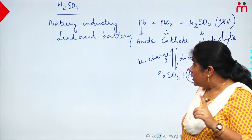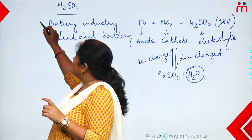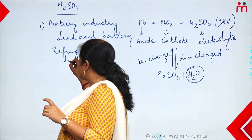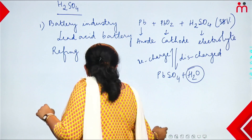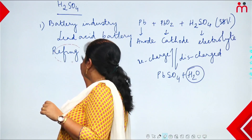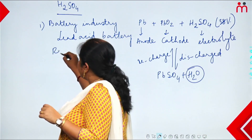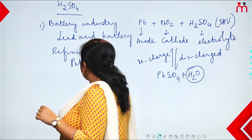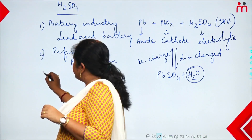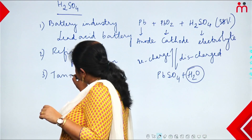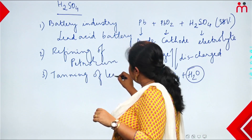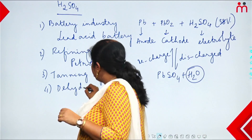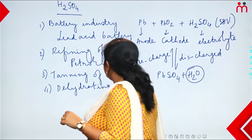Next use of sulfuric acid: it is used in refining of petroleum. Sulfuric acid is used in petroleum purification/refining. Apart from petroleum refining, sulfuric acid is also used in leather tanning — in the leather industry, sulfuric acid is used for tanning of leather.